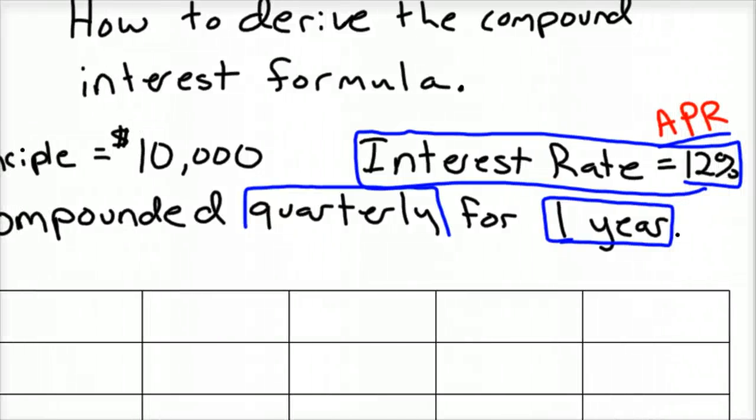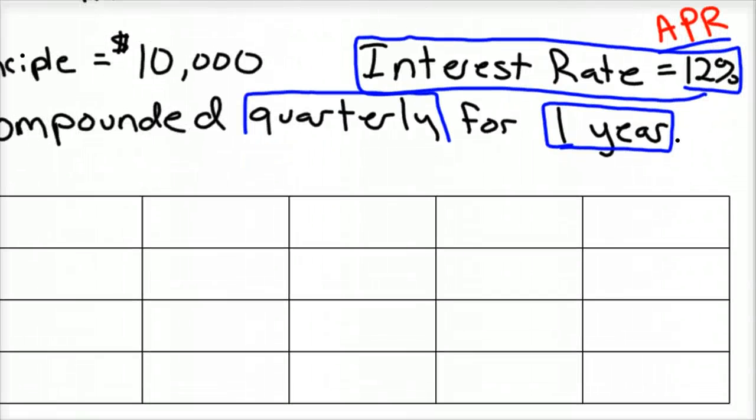All right. So I've got this table here. And this would be our periods or compounding time, our quarters. You could probably put quarters there. And we've got quarter one, quarter two, quarter three, and quarter four.